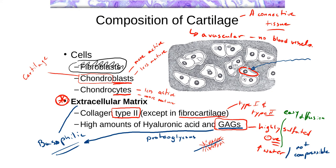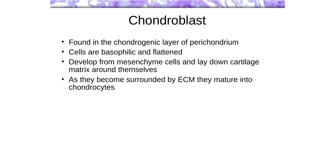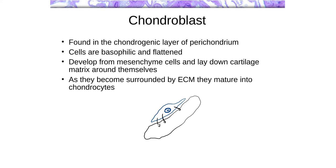Chondroblasts are found in the chondrogenic layer of the perichondrium. These are the immature form of the cell, and they are quite actively making lots of matrix. The chondroblast sits on the surface of the cartilage matrix and begins producing matrix material — secreting glycosaminoglycans and type 2 collagen. It is very actively producing lots of proteins for export, resulting in a basophilic matrix around it.